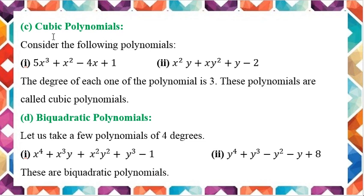Cubic polynomials have the highest exponent equal to 3. Consider 5x cubed plus x squared minus 4x plus 1 — the highest exponent is 3, so it is a cubic polynomial. Similarly, in the second example, x squared y plus xy squared plus y minus z — x squared times y gives exponent 2 plus 1 equals 3; xy squared gives 1 plus 2 equals 3. So the highest degree is 3 and we call it a cubic polynomial.